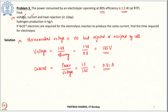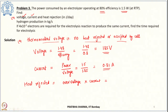The heat rejected by the electrolytic cell is overvoltage times current. Since for thermoneutral voltage there is no heat rejected, anything above that results in heat being formed and rejected. The overvoltage here is the difference: 1.85 − 1.48 = 0.37 volt, times the current 0.81 amps, giving 0.3 watt of heat rejected.